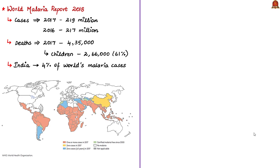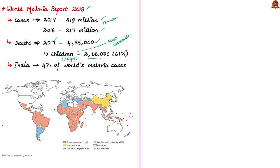According to the World Malaria Report 2018, released in November 2018 by the World Health Organization, there were 219 million cases of malaria in the year 2017 — at least 2 million more than the 217 million cases recorded in 2016. The estimated number of malaria deaths stood at 435,000 in 2017, and children under 5 years of age were the most vulnerable group, accounting for 61% of total deaths, meaning around 266,000 children died due to malaria.